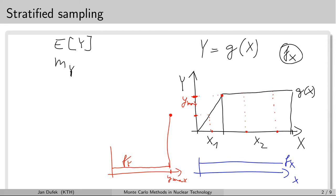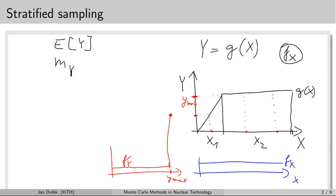The idea is to separately estimate the expectation value of the output random variable within each group, and at the end of the calculation these estimates can be combined. So the stratified sampling method tries to direct the samples into those locations where they can improve the precision of the final mean value the most. This is the general idea of the method — let's have a look at some details.